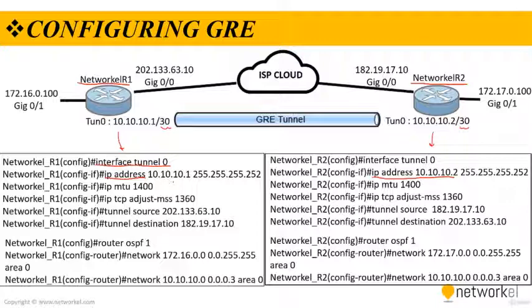Since GRE is an encapsulating protocol, we adjust the maximum transfer unit MTU to 1400 and the maximum segment size MSS to 1360 bytes. Because most transport MTUs are 1500 bytes and GRE adds overhead, we must reduce the MTU to account for the extra overhead. A setting of 1400 is common practice and ensures unnecessary packet fragmentation is kept to a minimum.